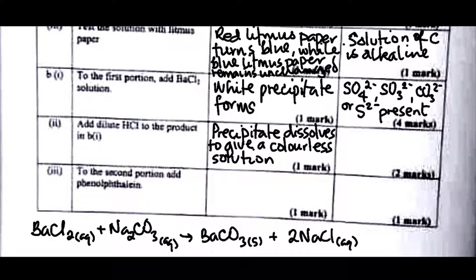So what does that tell us? For the precipitate to dissolve means that it is not SO4²⁻. It can either be SO3²⁻ or CO3²⁻. It could also have been S²⁻, but since it's just two marks here, so let's say that SO3²⁻ or CO3²⁻ present. Yes, any one could have been present.